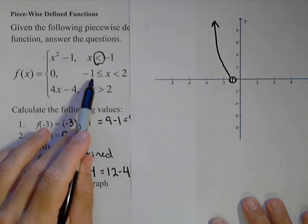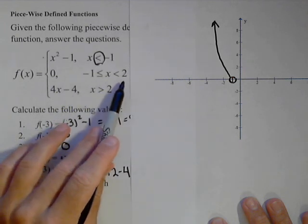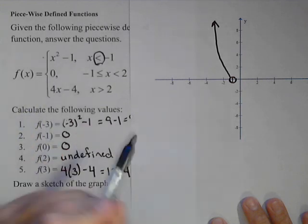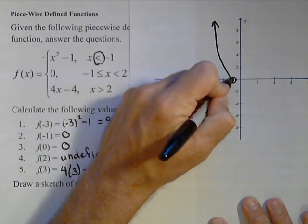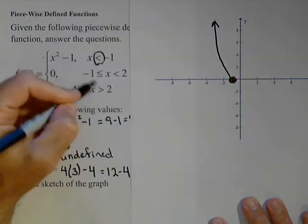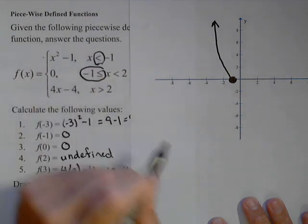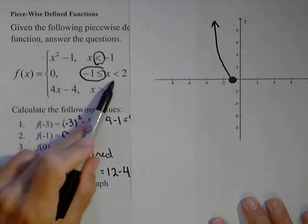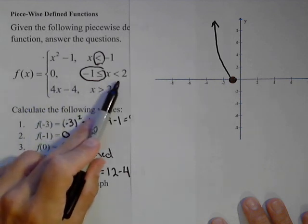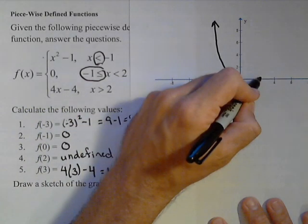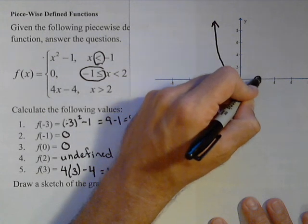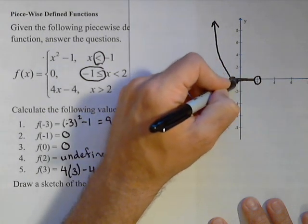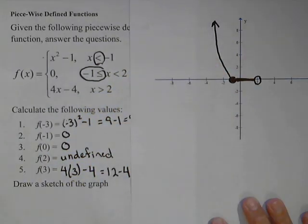Now, next we're seeing what's going on between negative one and two. At negative one exactly, it's zero. So this allows us to now have a closed in circle at negative one because of this right here. Now, our function is just zero all the way up until two, but not including two. So at two, I'm going to want to put an open circle, and now the function is just zero, which means it's just going to go right along the x-axis like so.